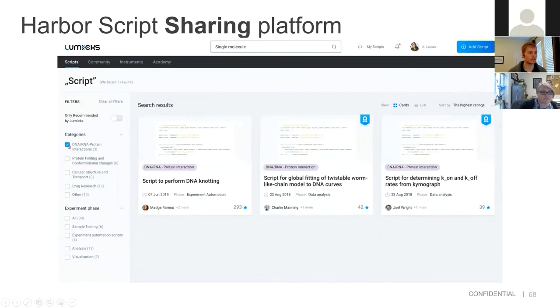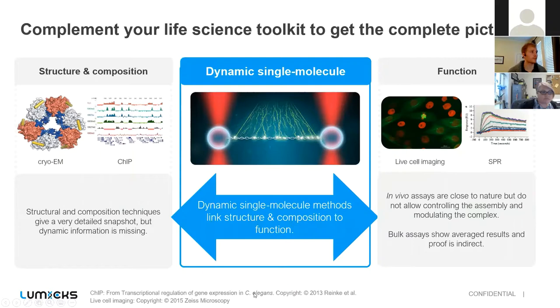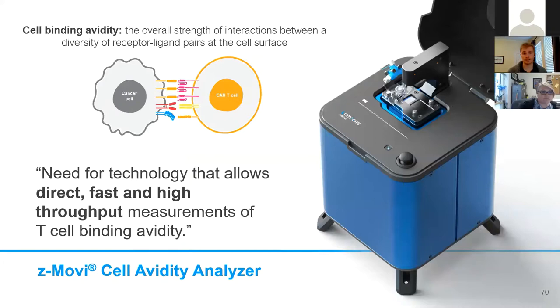So with that, we have I think a few minutes and I'll conclude with a couple of things. I hope you now appreciate where dynamic single molecule can come into your research, how it can bridge this gap between structure and compositional assays and your functional assays. And while I talked a lot today about the C-TRAP, we also have a second instrument that we launched last year called the Z-MOVI. I actually don't work on this side of the company, so I can't tell you that much about it, but it enables you to measure forces between things like CAR T cells and cancer cells on the order of hundreds of cells. So it's really cool. In like five minutes, you can measure the forces between 500 cancer cells and test different CAR T combinations. So if that's something that interests you, feel free to reach out. I can always put you in touch with someone who knows more.